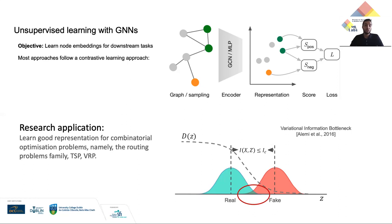My research focuses on improving and designing better choices for the different components of this contrastive framework, with an application to routing problems, namely TSP and VRP.